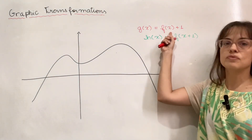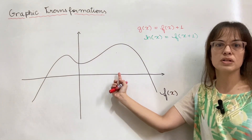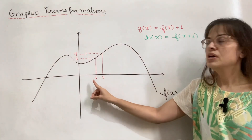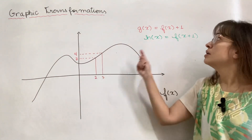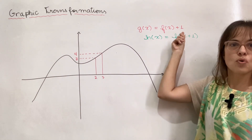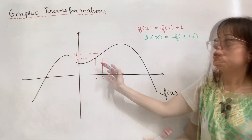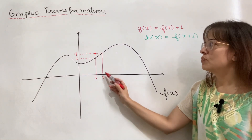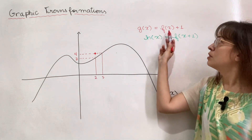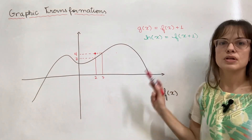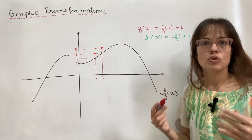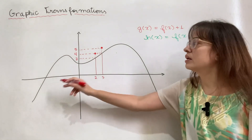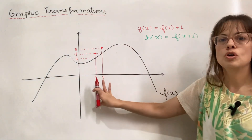The vertical translation is nothing special. You just take the value of the function at any x and add 1 to that value, so it goes up. For example, if f(2) was 3, then 3 plus 1 is 4 and g(2) is going to be 4. Same thing for x equals 3: f(3) is 4, 4 plus 1 is 5, so g(3) is 5. Those are just examples, but the same thing is happening to every single point, so you get the whole function moving up.